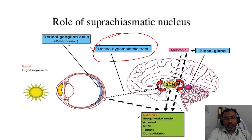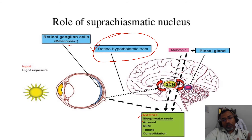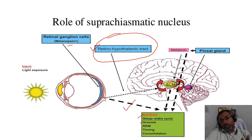When the retina — specifically retinal ganglion cells — receives information about light exposure, that light exposure creates stimuli in the suprachiasmatic nucleus. They also send impulses to the brain stem, sending a signal about the arousal system.